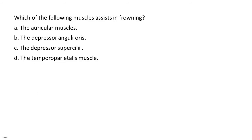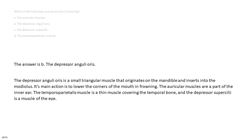Which of the following muscles assists in frowning? A. The auricular muscles. B. The depressor anguli oris. C. The depressor supercilii. D. The temporoparietalis muscle. The answer is B, the depressor anguli oris. The depressor anguli oris is a small triangular muscle that originates on the mandible and inserts into the modiolus. Its main action is to lower the corners of the mouth in frowning. The auricular muscles are a part of the inner ear. The temporoparietalis muscle is a thin muscle covering the temporal bone, and the depressor supercilii is a muscle of the eye.